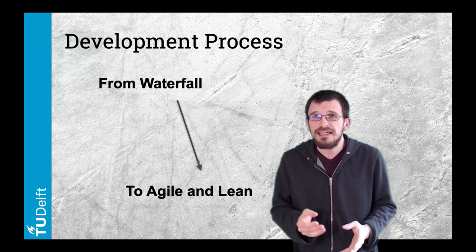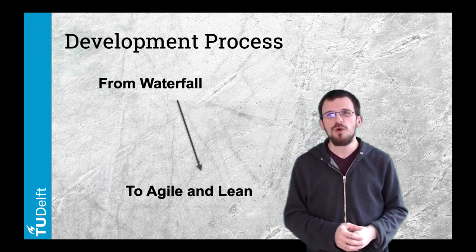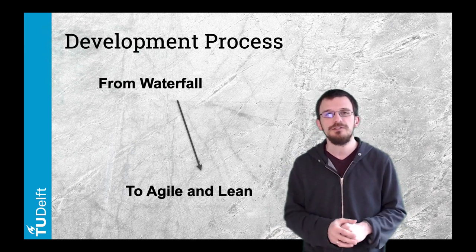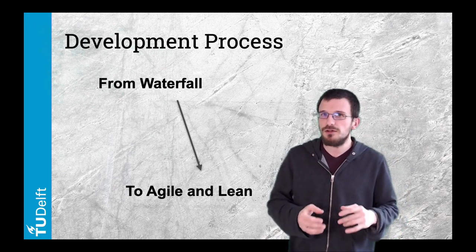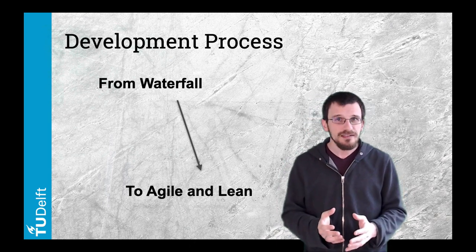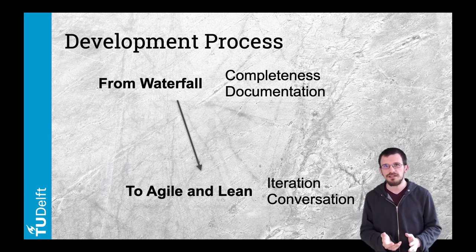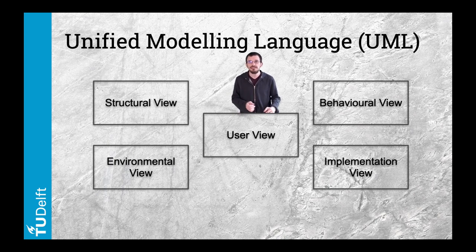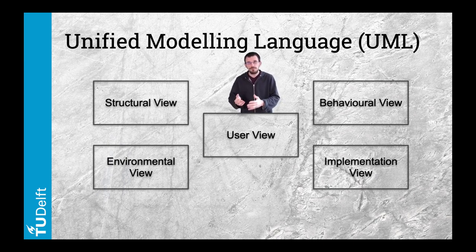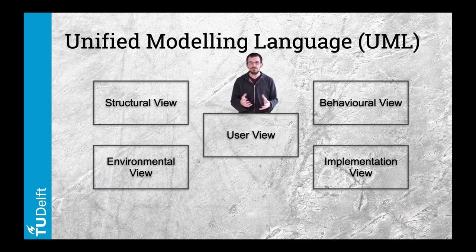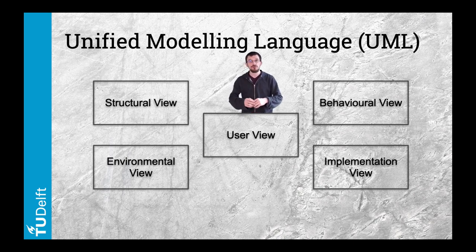The way software-based products are designed today is relatively new, so your role needs to fit in this transformed development process. A couple of decades ago, the focus was on completeness — a full list of requirements with extensive documentation was required before starting product implementation. Requirements and documentation were strong motivations for modeling software throughout its design. UML, or Unified Modeling Language, is still a reference today, taught in computer science classes to formalize the user structure, behavior, environment, and implementation perspectives while designing software. These views represent a collection of 14 UML diagrams to specify software.